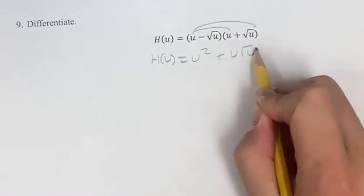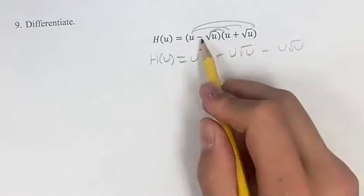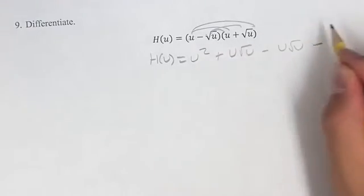minus the inner u root u again, minus the square root of u squared.